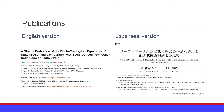Two years ago I published the derivation of the Birch-Murnaghan equation of state in a paper, both an English version and a Japanese version. I would be happy if you cite these papers when you use the Birch-Murnaghan equation of state in your original paper.